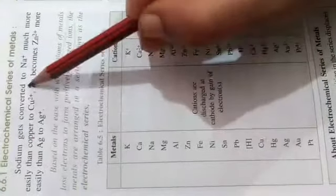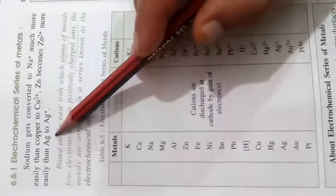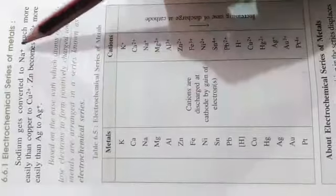This gives us the electrochemical series of metals. Sodium converts to sodium ion much more easily than copper converts to copper ion. Zinc becomes zinc ion more easily than silver becomes silver ion. So this is a comparison of how easily each metal loses electrons and forms an ion. Based on this, metals are arranged by how readily their atoms lose electrons to form positively charged cations.